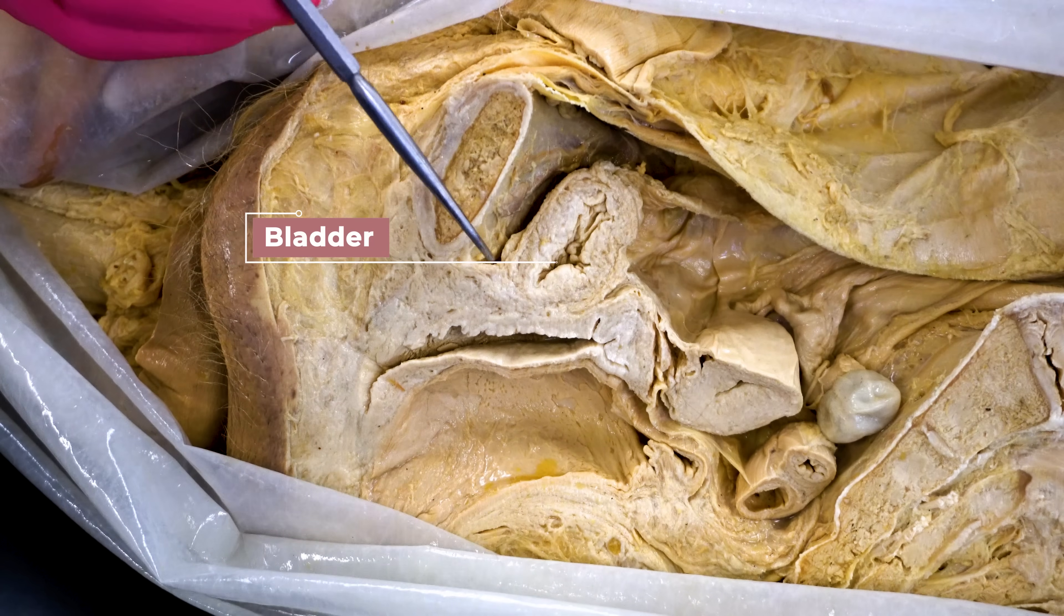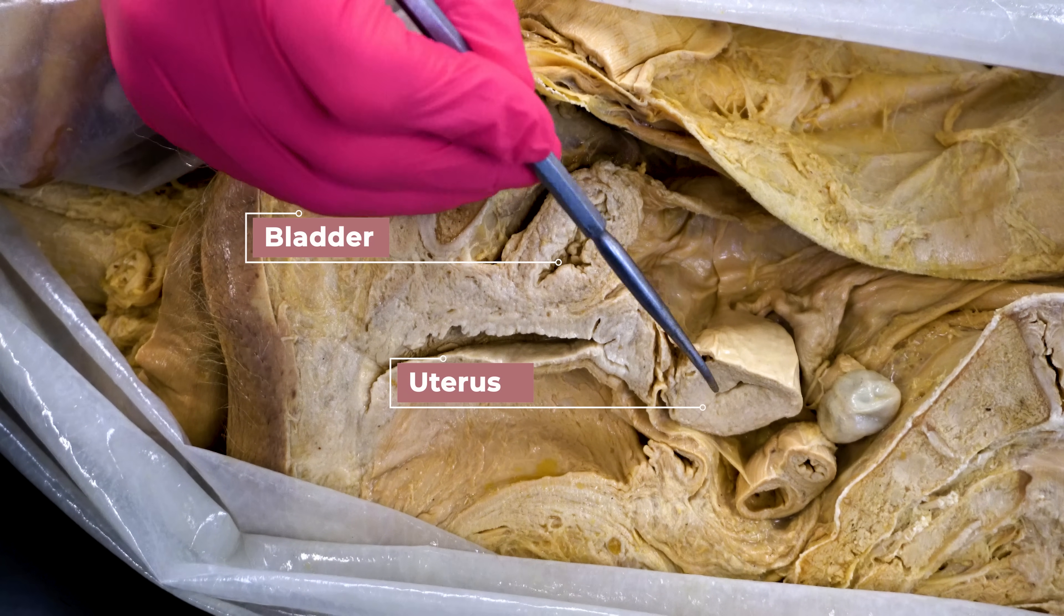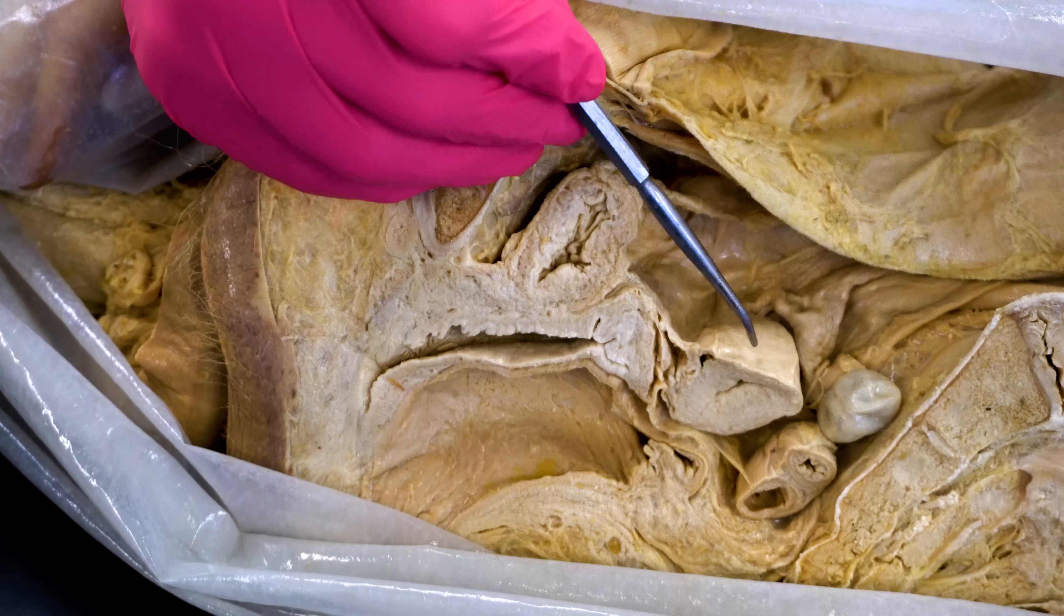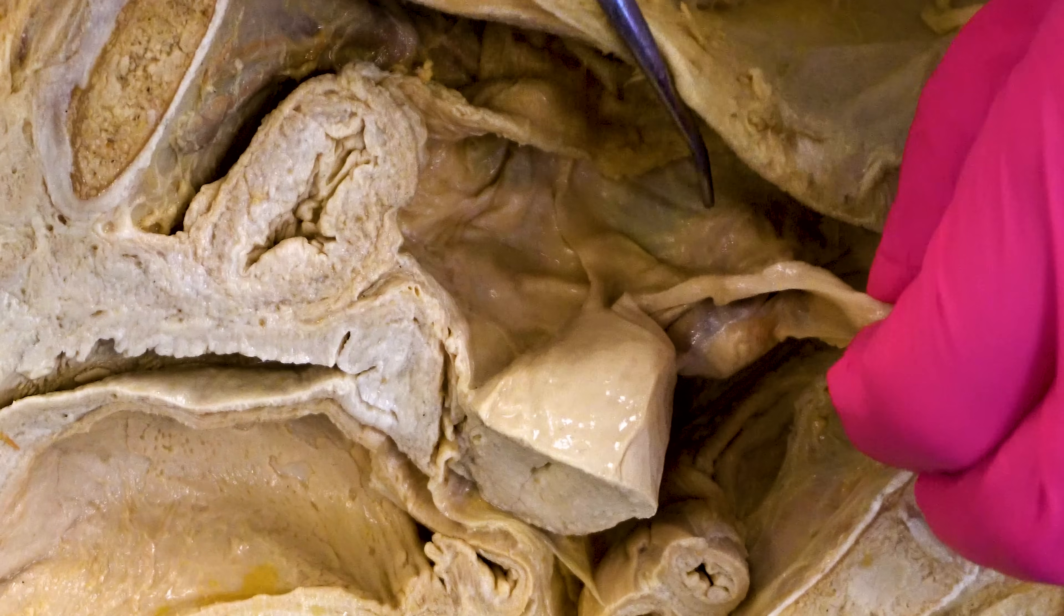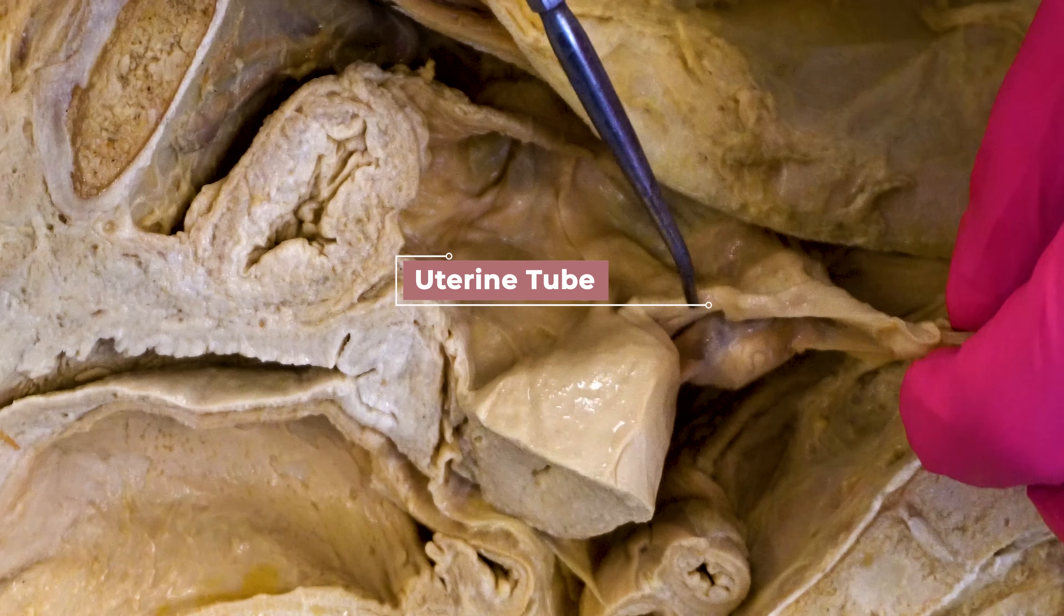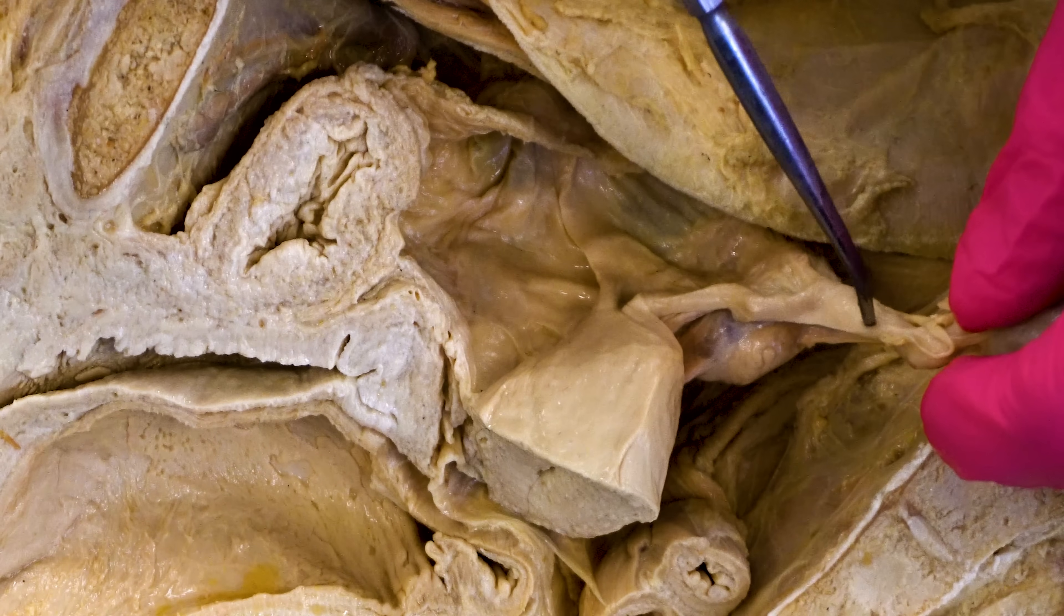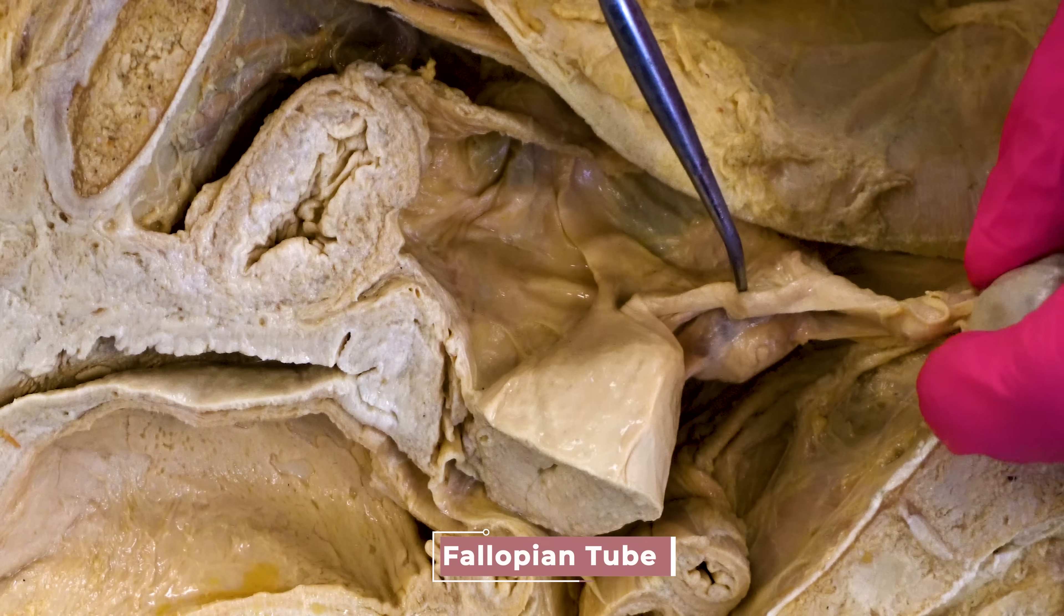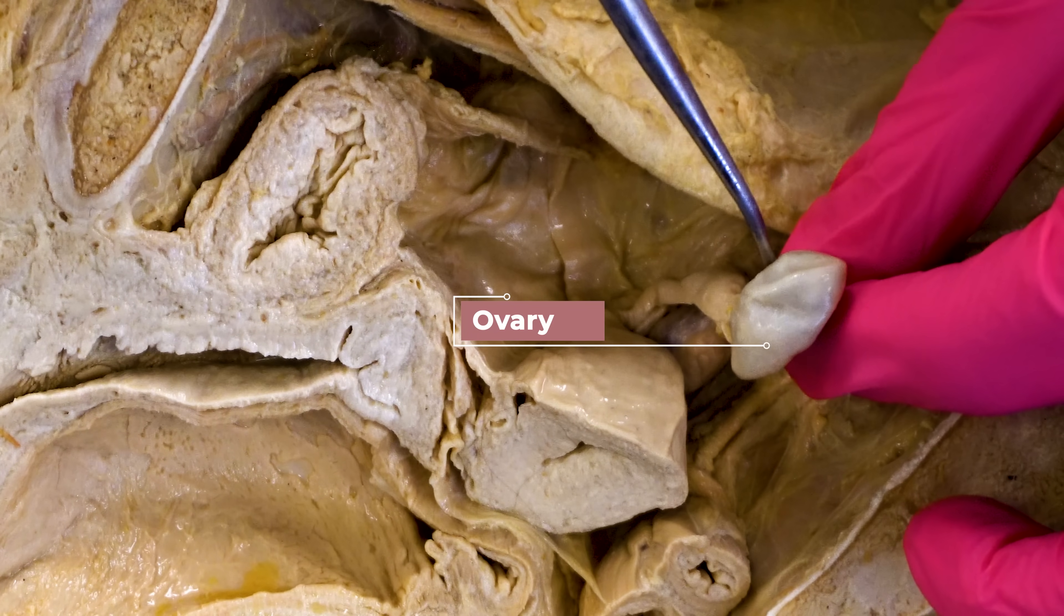And I should mention the bladder here. For anybody who's ever been pregnant, this relationship between the bladder and the uterus is quite important. But some other really cool structures that we have here is we've got the uterine tube. Here's the uterine tube. This is also referred to as the fallopian tube. And then of course we have the almond-sized ovary right here. So just keep those structures in mind.